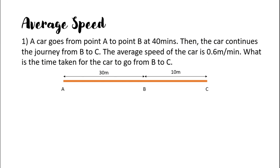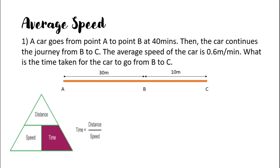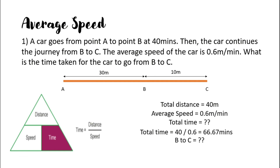Another example: a car goes from A to B in 40 minutes then B to C. The average speed is 0.6 meters per minute. Total distance is 40 meters. To find time: total time equals distance divided by speed, which is 40 divided by 0.6, equaling approximately 66.67 minutes. Time from B to C equals total time minus time from A to B, so 66.67 minus 40 equals 26.67 minutes. Today we covered the concept of ratio, rate, average, and speed.